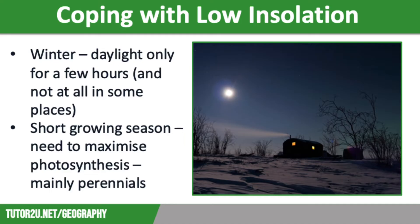The next issue is low insolation. Polar and tundra regions have high latitudes, meaning that the solar energy hits the surface at an angle and the sun's rays are spread out. This makes light weak, even during the summer when daylight lasts most of the time. During the winter, daylight only happens for a few hours and snow covers plants entirely for much of the year. This has meant that plants have had to adapt to maximise the potential for photosynthesis during the very short growing season.